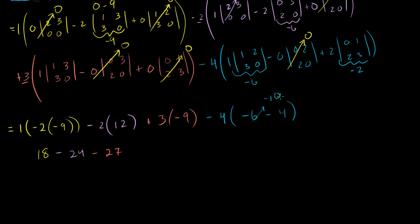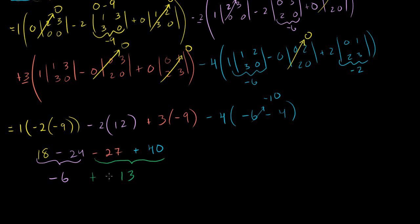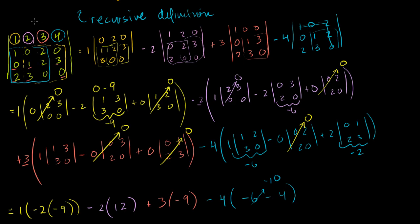Let's simplify: 18 minus 24 equals minus 6. Then minus 27 plus 40 equals plus 13. So minus 6 plus 13 equals 7. After all of that computation, the determinant of this matrix is equal to 7.